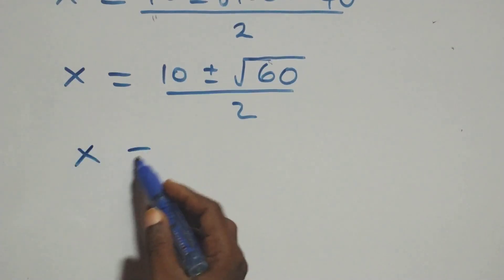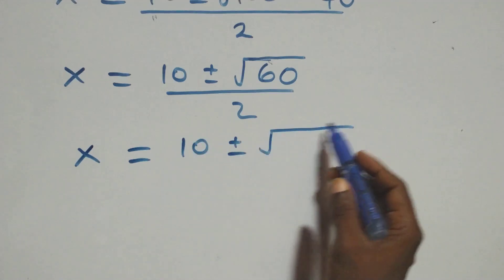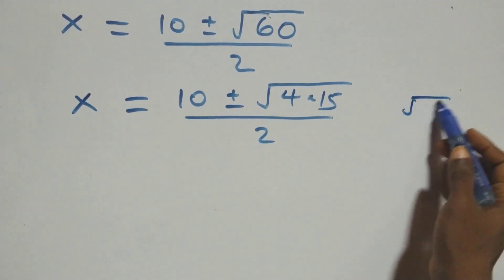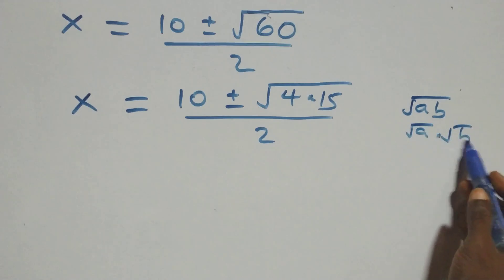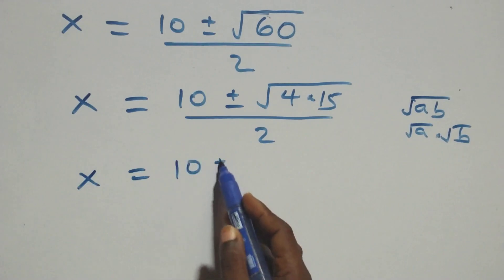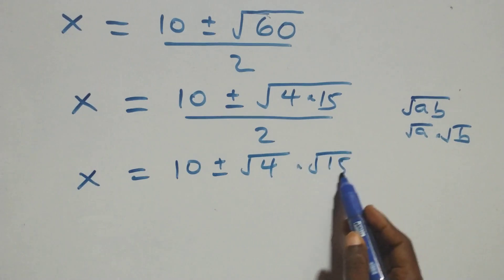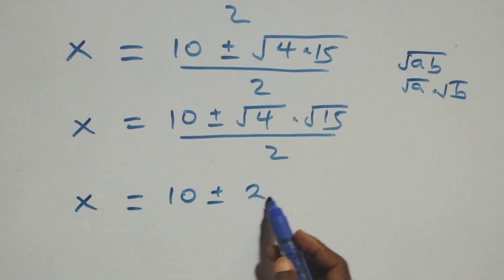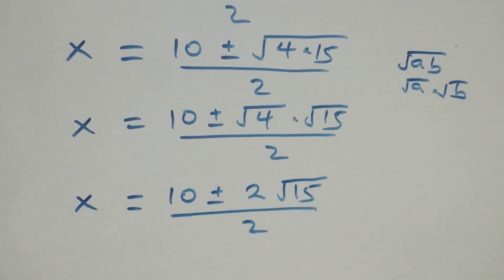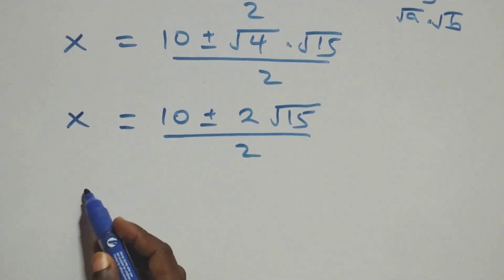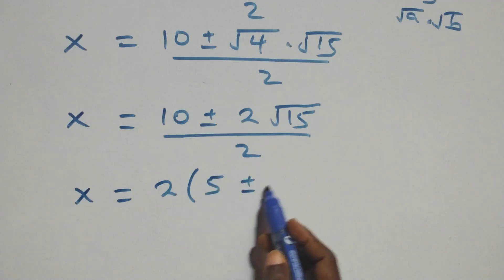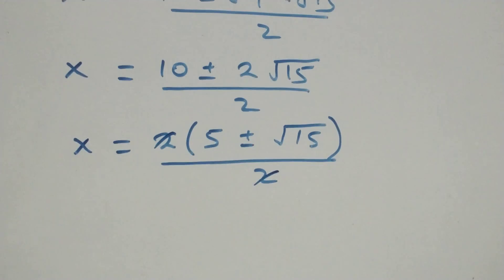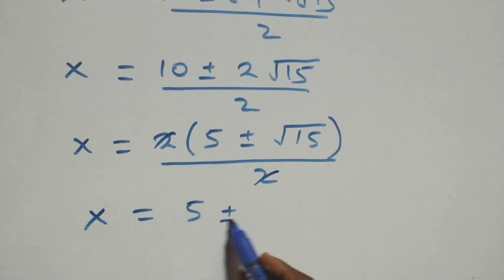We have x equals 10 plus or minus square root of 4 times 15, over 2. Since root(a times b) equals root a times root b, this becomes x equals 10 plus or minus root 4 times root 15, all over 2. Since 2 is common, we factor: x equals 2(5 plus or minus root 15) over 2. The 2s cancel, giving x equals 5 plus or minus root 15.